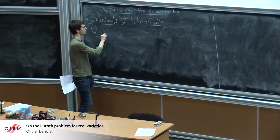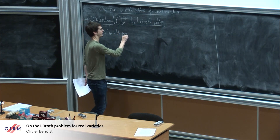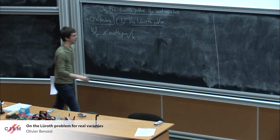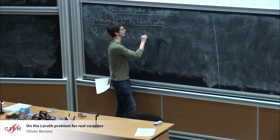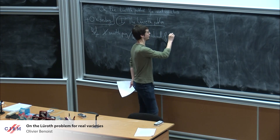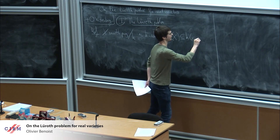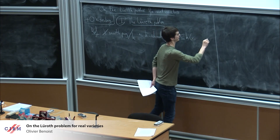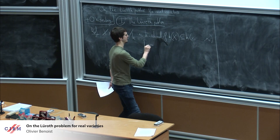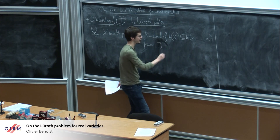I take X, a smooth projective variety over a field k, and I say that X is k-rational if its function field is a subfield of a purely transcendental field. Geometrically, this is equivalent to the existence of a birational map from projective space to X.